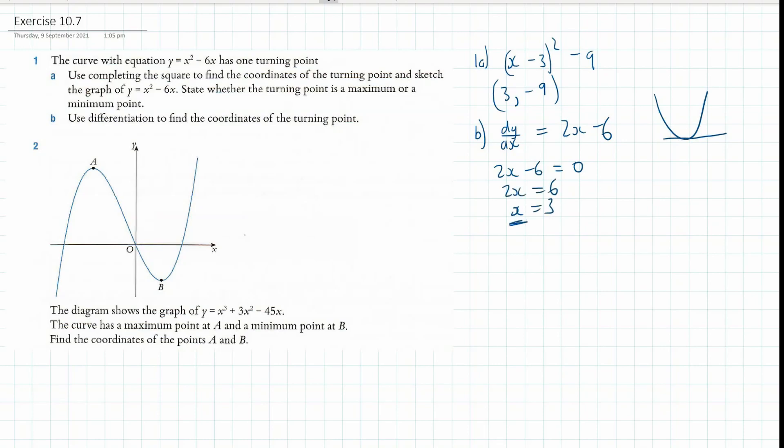That is where the turning point occurs. And to find my y value, I chuck that 3 into the original curve equation, this one here. So, 3 squared minus 6 times 3. Now, that's 9 take away 18, which is negative 9. So, 3 comma minus 9.